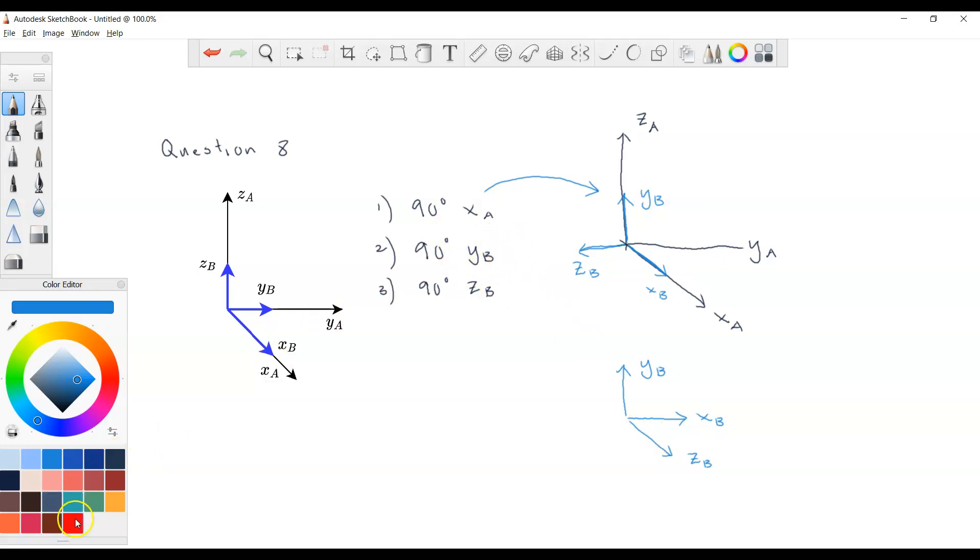Next, we have to rotate 90 degrees about zB. Again, it's positive angle. So if I may draw it here, if I rotate about zB, zB will not change. But my xB will be up here. Then, finally, my yB will be here.